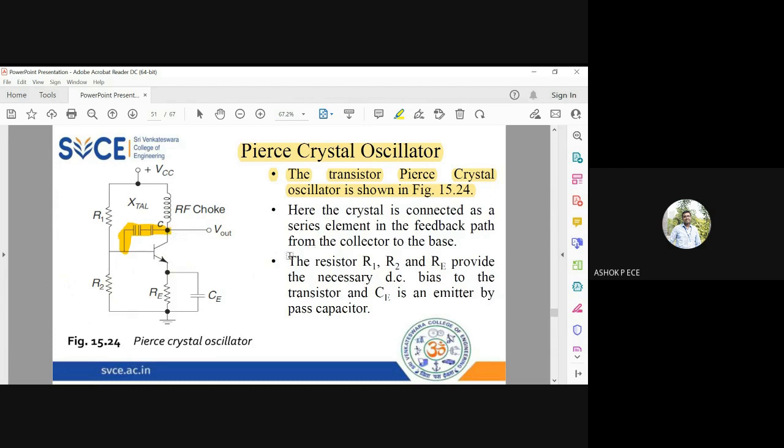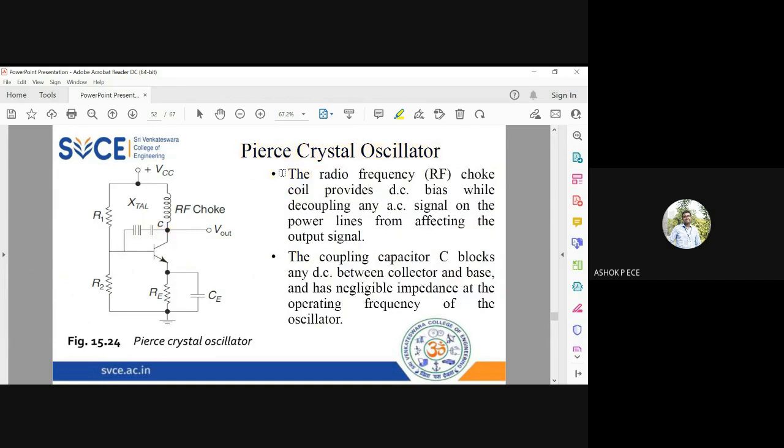R1, R2, RE, and CE are going to provide the necessary DC bias and control the Q point of your transistor. The RF choke will ensure that the DC is completely coupled to the collector of your circuit, thereby ensuring that the collector of the transistor is properly biased.